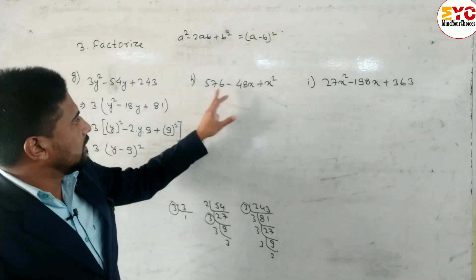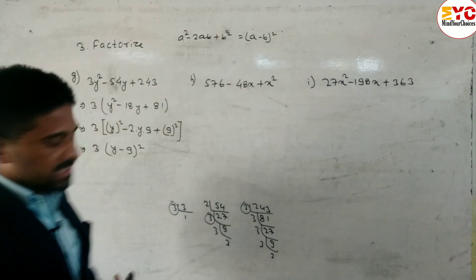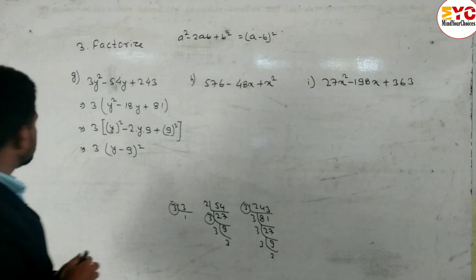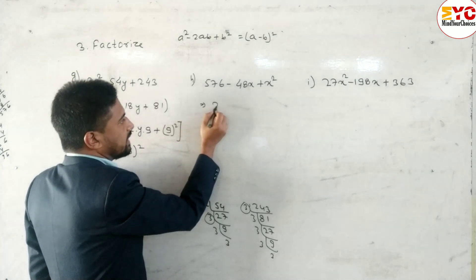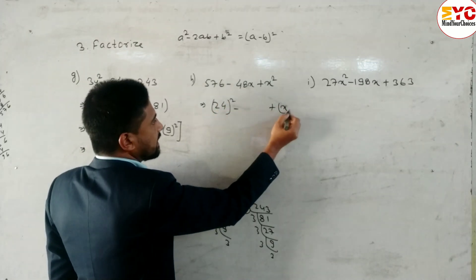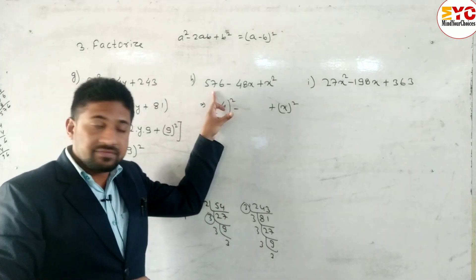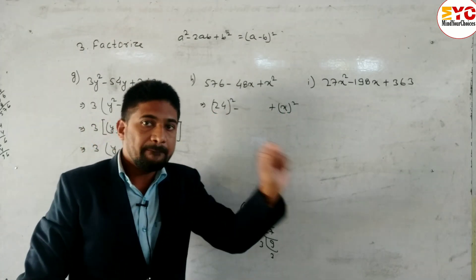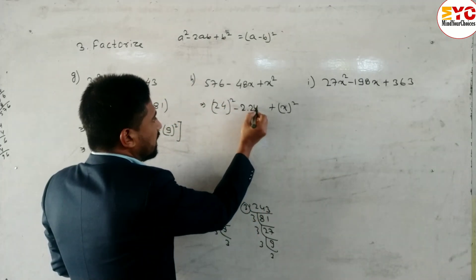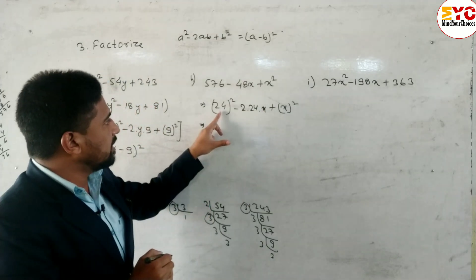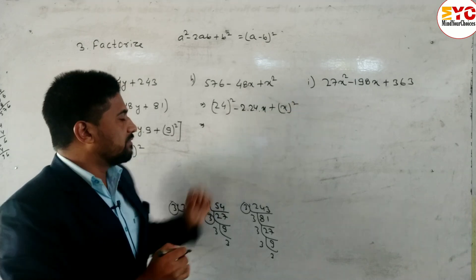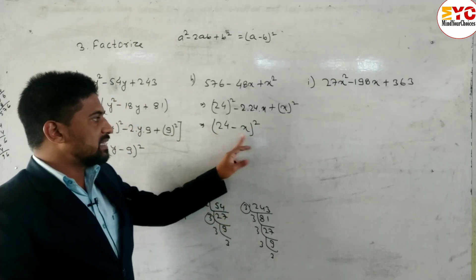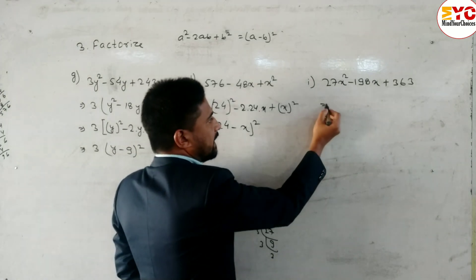For question 3h: 576 - 48x + x². The square root of 576 is 24, so we write (24)². The last term is x². In place of a we have 24 and in place of b we have x. At the middle, 2ab = 2 × 24 × x = 48x. This is a² - 2ab + b², so the answer is (24 - x)².